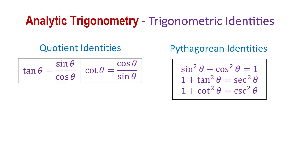Hello, in this video I will talk about two more groups of trigonometric identities, and these are the quotient identities and the Pythagorean identities. Let's talk about the quotient identities first.